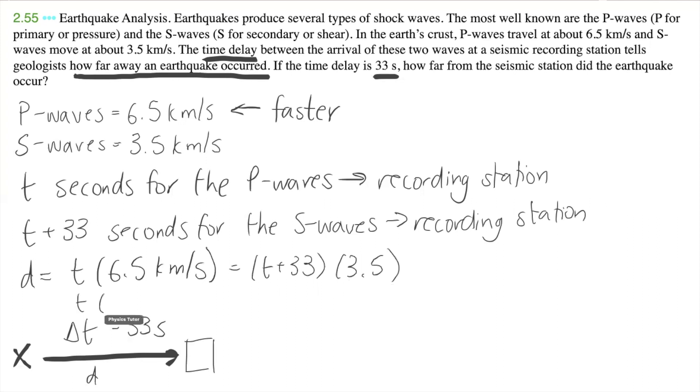So time times V P wave is equal to T plus change of time, time delay, V of S wave. And that's going to be equal to the same distance d.